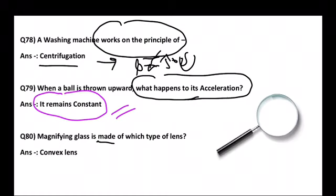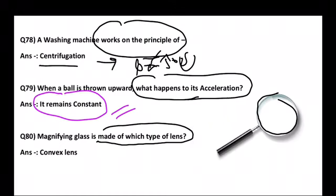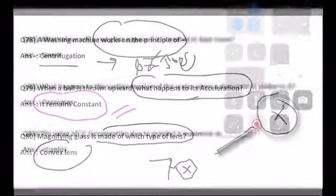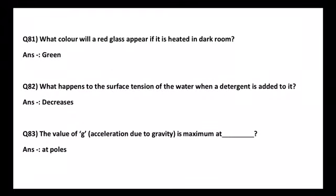Next question: Magnifying glass is made up of which type of lens? The answer is convex lens. A magnifying glass uses a convex lens.